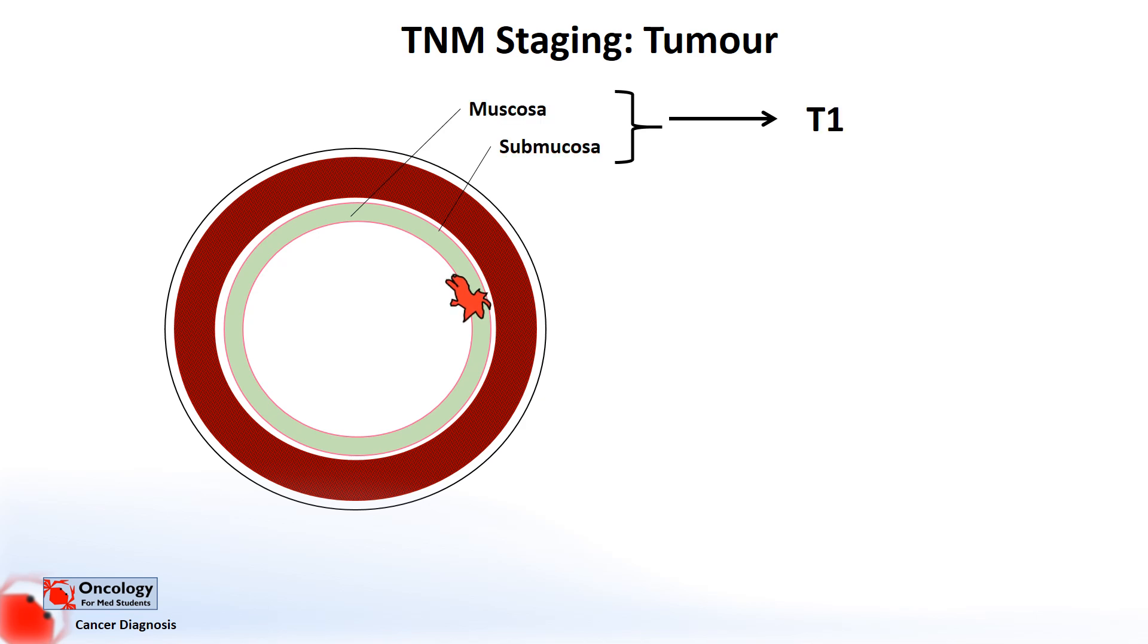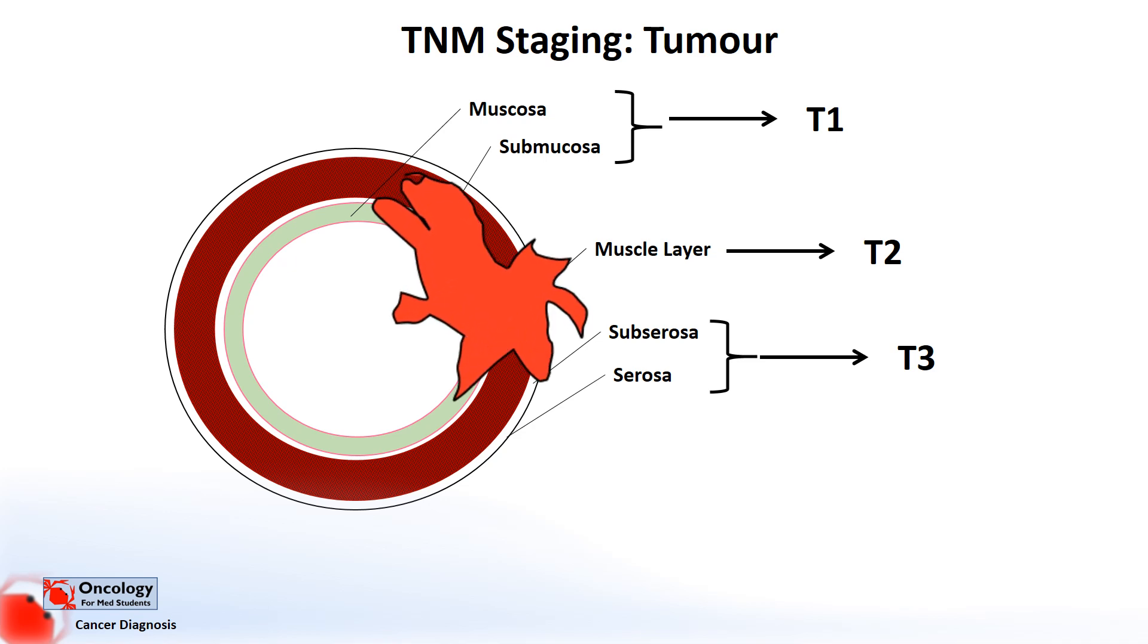If it enters the muscle layer but doesn't go all the way through, we label it T2. If it enters the subserosa or serosa through the muscle layer, it's a T3 tumor. And if it invades to the extent to which it's actually outside the colon, it's labeled a T4 tumor.